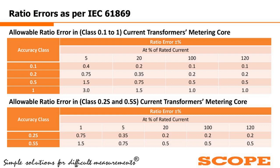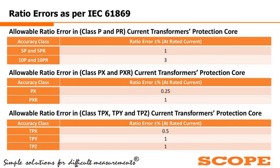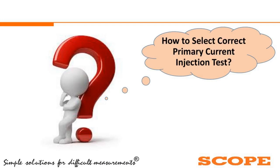For protection cores — class P and PR — the limits are: for 5P and 5PR, ratio error should be within 1%; for 10P and 10PR, the ratio error should be within 3%. For special protection cores PX and PXR, the ratio error should be within the specified limit. For transient protection cores — TPX, TPY, and TPZ — the limits are: TPX 0.5%, TPY 1%, and TPZ 1%.